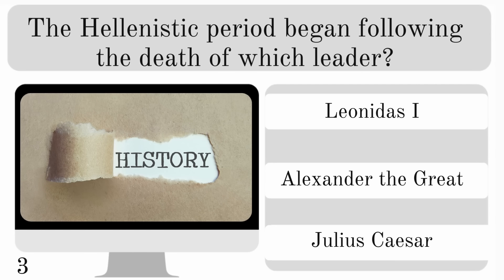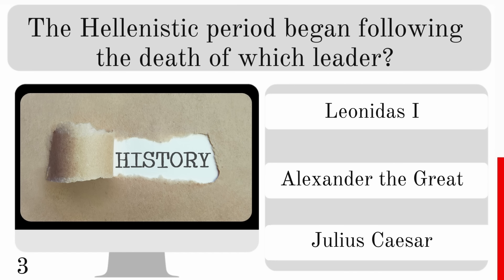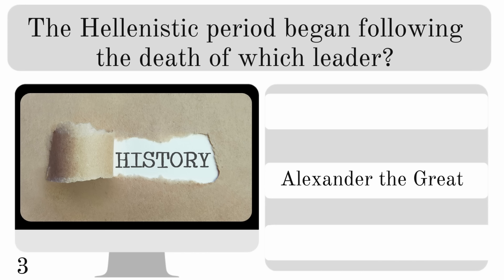The Hellenistic period began following the death of which leader? Leonidas the First, Alexander the Great or Julius Caesar? And it was following the death of Alexander the Great.